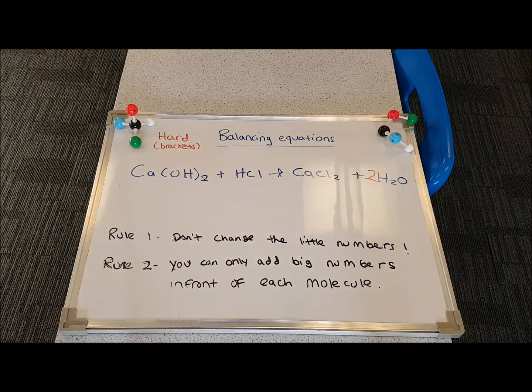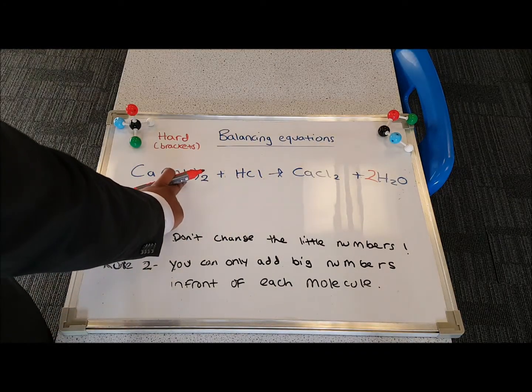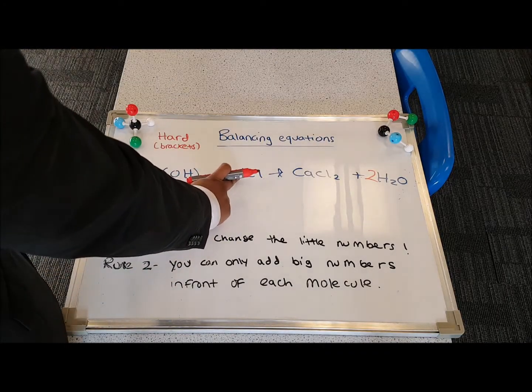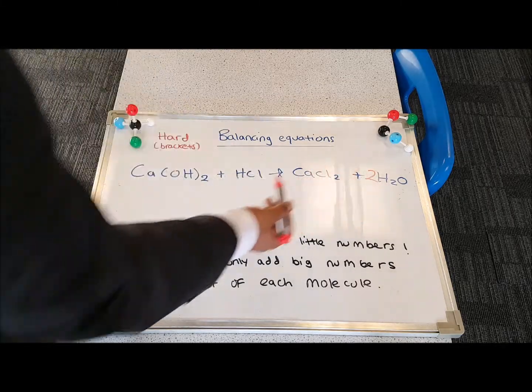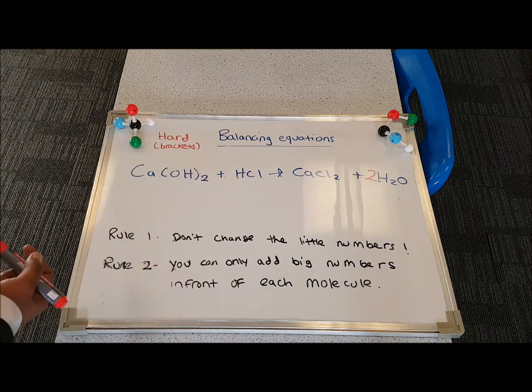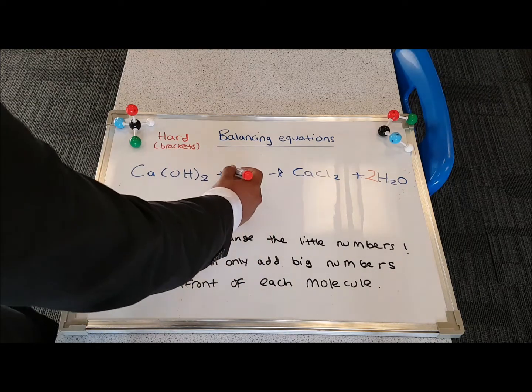I've got 2 hydrogens here, 1 hydrogen there. So in total, there's 3 hydrogens on the left. There is 4 hydrogens on the right. So to balance that, I'm going to put a 2 over here. So now I've got 2 here and 2 here, 4 on the left.